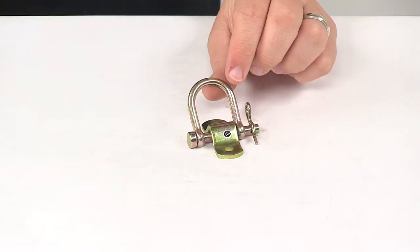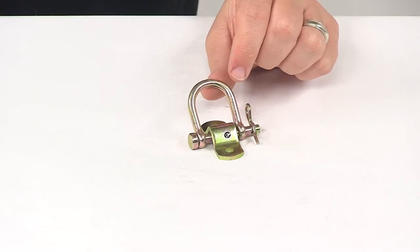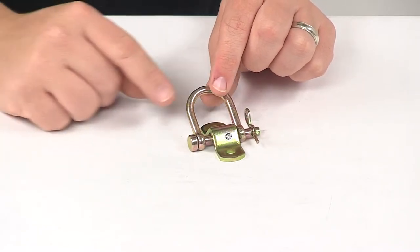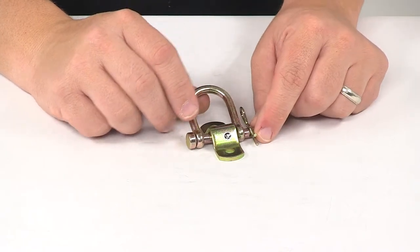Today we're taking a look at the Cargo Smart removable D-ring tie-down anchor. This D-ring adds an extra anchor point for your trailer, truck, or van, and it does have the removable anchor point.